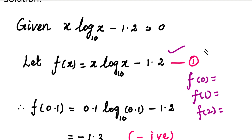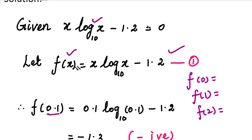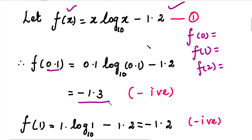But in this problem, we have a function of log, and we cannot define the value of log(0). So we calculate f(0.1). What is the value of this function? In f(x), we substitute 0.1. So in the right-hand side we substitute 0.1, and the answer is minus 1.3.